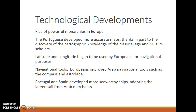So both of the traditional trade routes to Asia were blocked. Technological developments were important as well. The rise of powerful monarchies in Europe created established governments with the money to launch great expeditions. The Portuguese developed more accurate maps, thanks in part to classical cartographic knowledge recovered through Muslim scholars during the Renaissance. Latitude and longitude began to be used for navigation, Europeans improved Arab navigational tools such as the compass and astrolabe, and Portugal and Spain developed more seaworthy ships, adopting the Latin sail from Arab merchants.